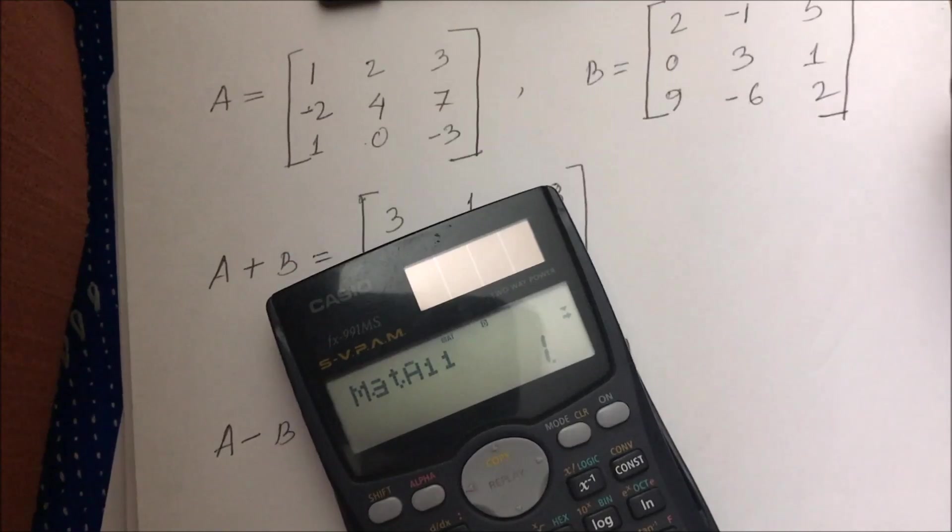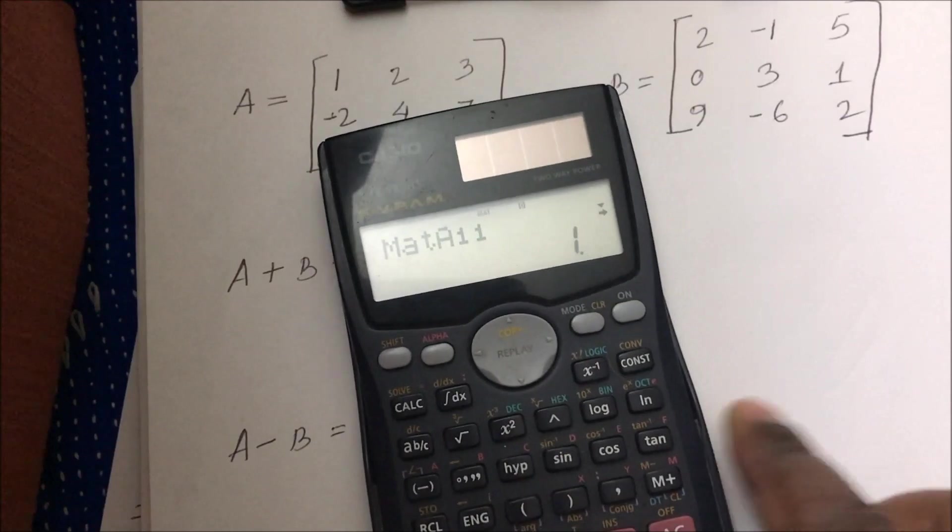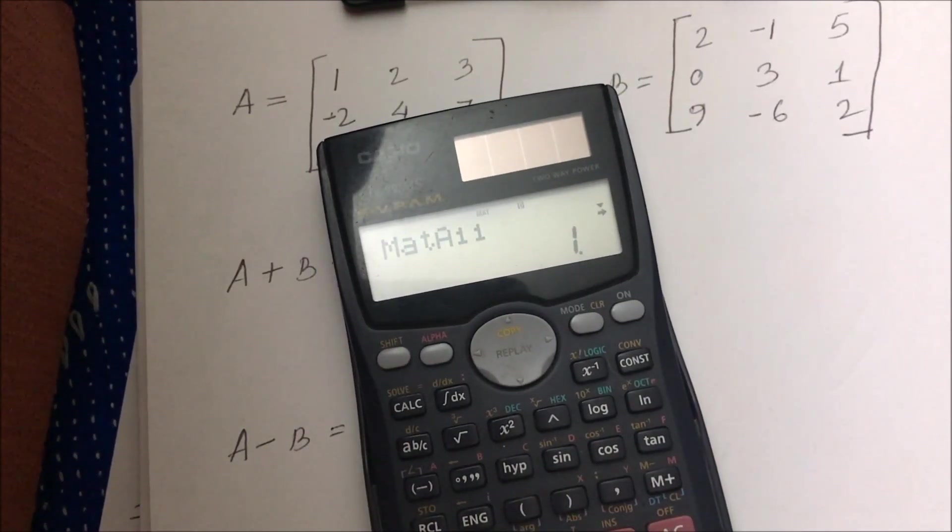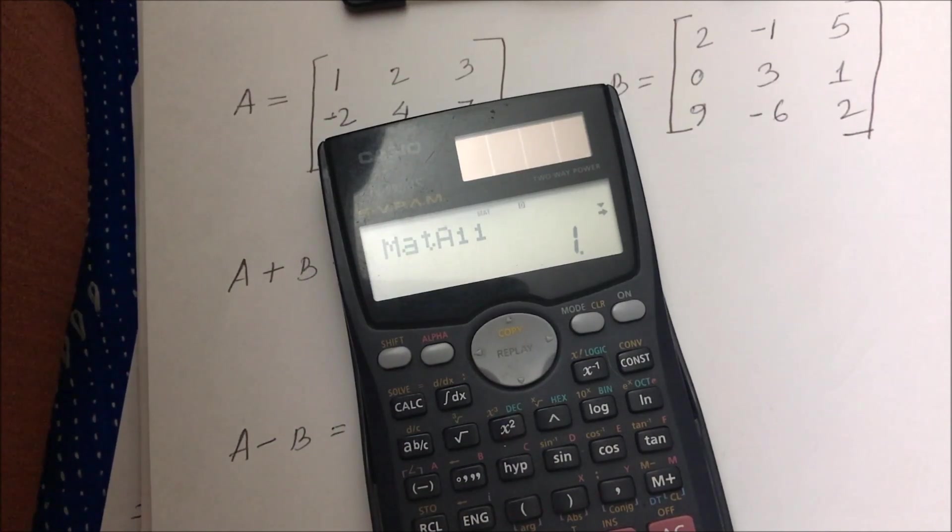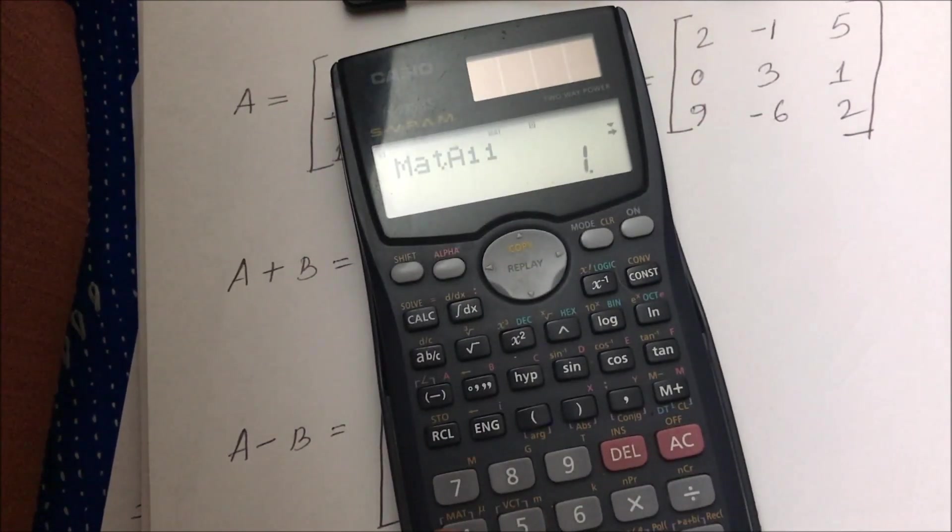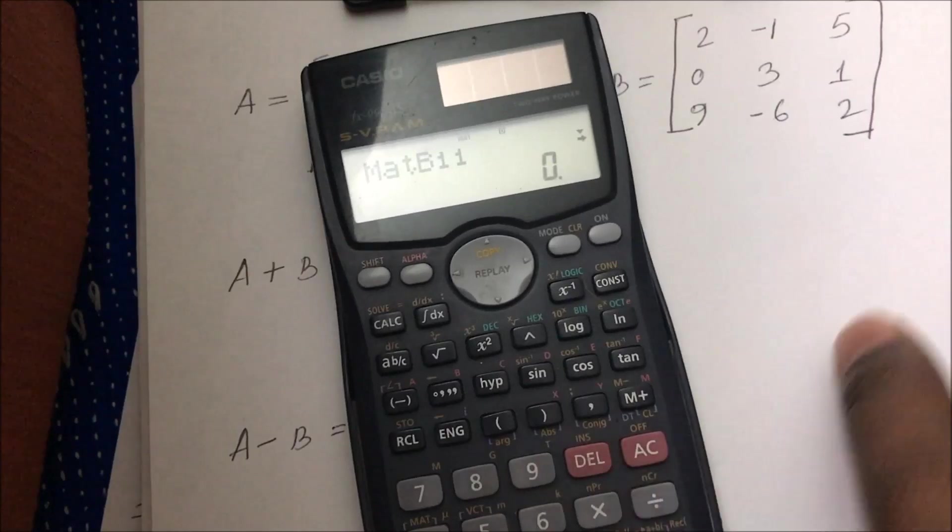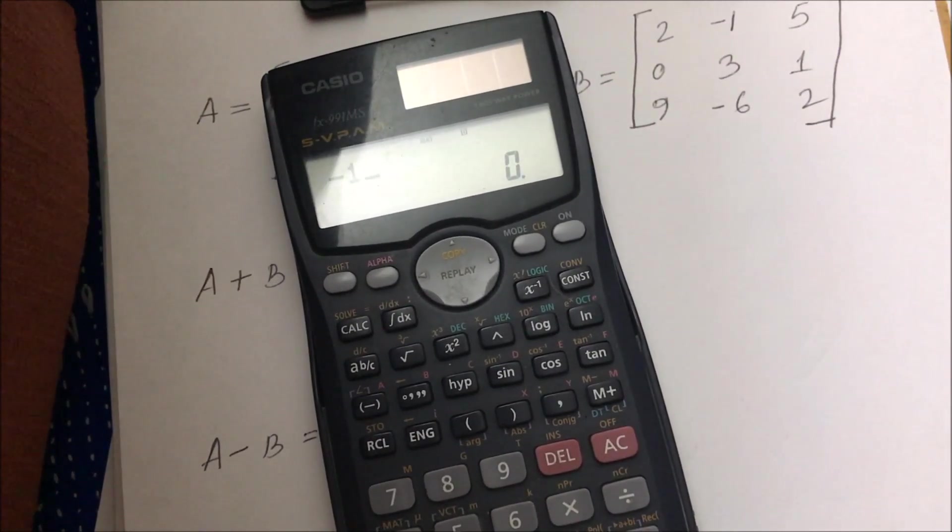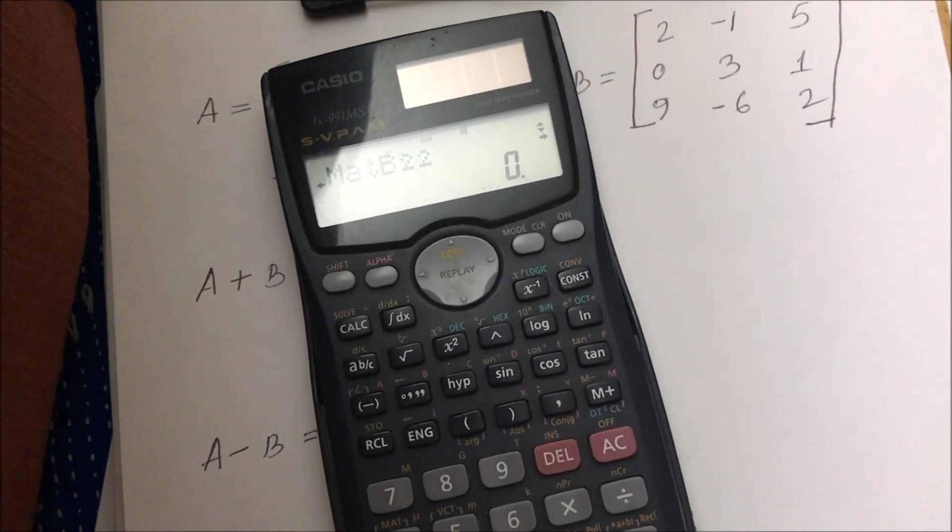I already put my first matrix. Similarly, I will go ahead and put the second matrix B. I will do this a little faster for you. At first it looks a little lengthy and maybe you don't like to do it the first time because it looks lengthy, but I'm sure if you do a little more practice, you can do it much faster and you will like it rather than doing by hand. Again, I will put shift, go to the matrix button, press 1. I'm going to name it B. My dimension is 3, column number again 3. So my B matrix is: 2, -1, 5, 0, 3, 1, 9, -6, 2.